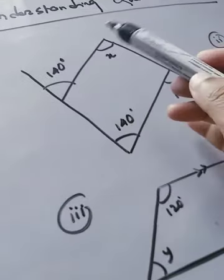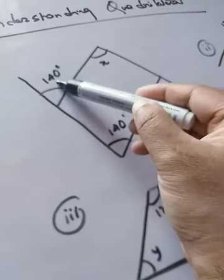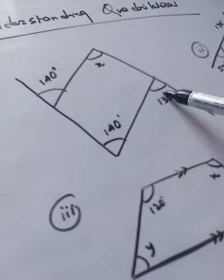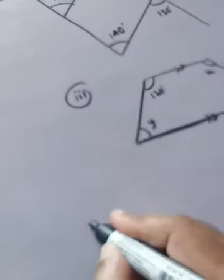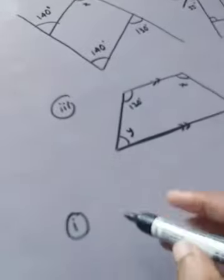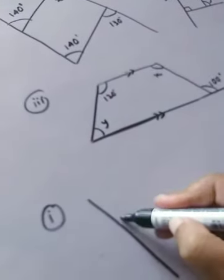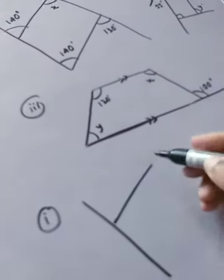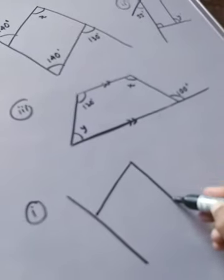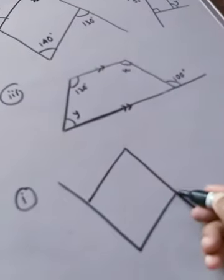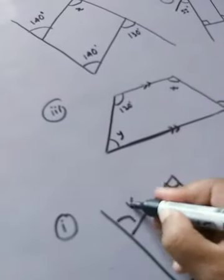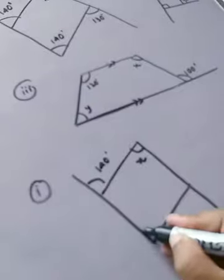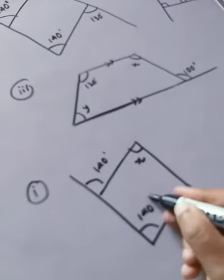The first figure: one exterior angle is given as 140°, another exterior angle is given as 130°, and you have to find the value of x. First of all, let's draw this figure. So this is x, this is 140° given, and this is also 140° given.